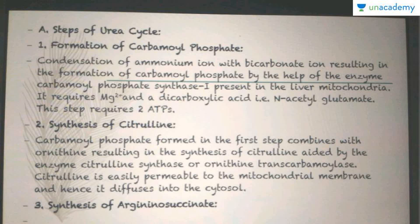Now the urea cycle. We ingest proteins in our diet; this protein is broken down into amino acids, which is the simplest unit. The essentials are absorbed while the waste forms urea through the urea cycle. This urea is then sequestered inside the kidneys where it is concentrated to form urine, which is then eliminated from the body.